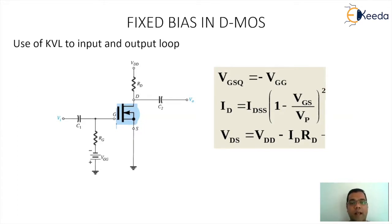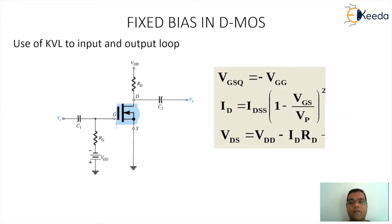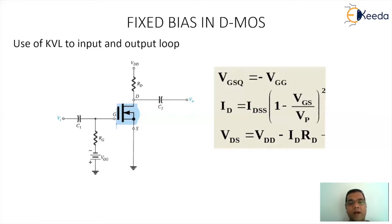When you look at the DC equivalent circuitry with capacitors open, you will find the device with the two resistances and the two batteries. Going for the equation VGS, it will be equal to minus VGG. We use the equation ID equal to IDSS. Whenever a sum is given, you will be given all values like VDD, VGG, RD, RG, and the device parameters. Solving for drain current ID, you then apply KVL to the output loop to get VDS equal to VDD minus ID·RD. This is how you calculate the operating point — ID and VDS — for the fixed bias D-MOSFET circuitry.